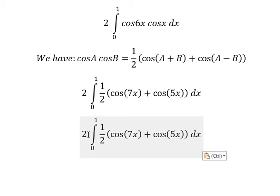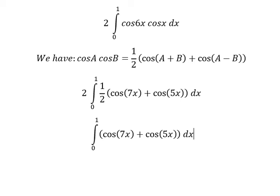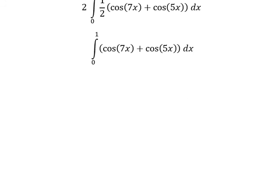Number 2 divided by 2. And now we have the final answer, the integration of cosine 7x, you got about 1 over 7 sine 7x, similar for the next one.